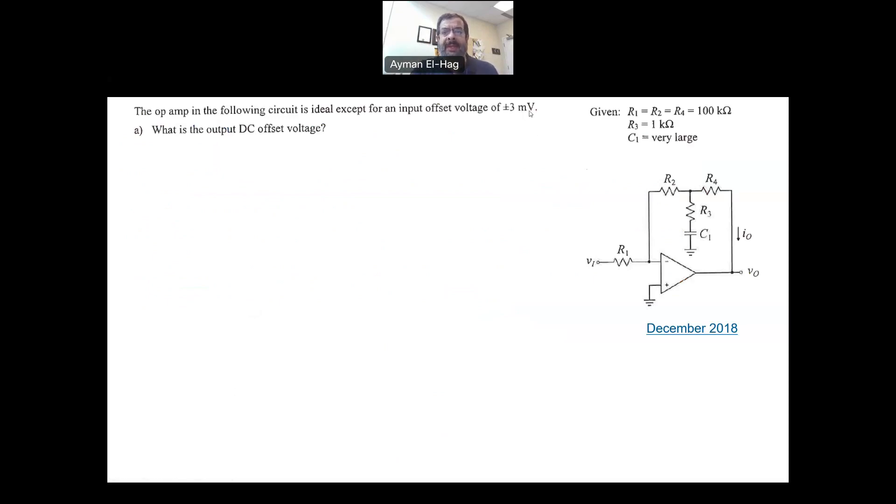Now, this example, basically, is in the exam of December 2018. And in that specific example, let's read the question. The op-amp is an ideal one, except for an input offset voltage of plus-minus three millivolt. That is the only thing that is not ideal. And you are given the values of R1, R2, and R4. Each one of those is 100 kilo-ohm. The R3 is 1 kilo-ohm, and the C1 is very large, is very, very large value.